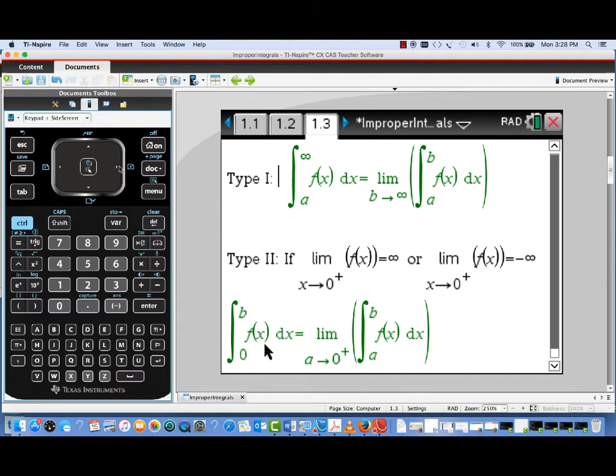To calculate a Type 1 improper integral, we'd replace the infinity limit of integration with a placeholder b, calculate that proper integral in terms of b, and then take the limit as b approaches infinity.